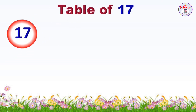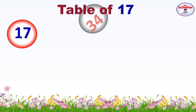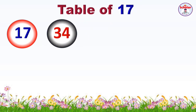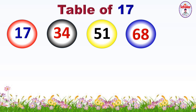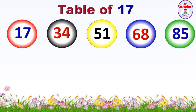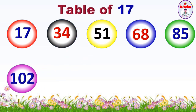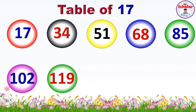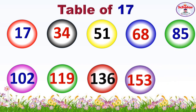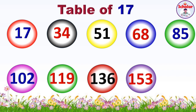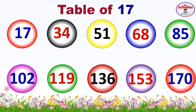Table of 17: 17×1=17, 17×2=34, 17×3=51, 17×4=68, 17×5=85, 17×6=102, 17×7=119, 17×8=136, 17×9=153, 17×10=170.